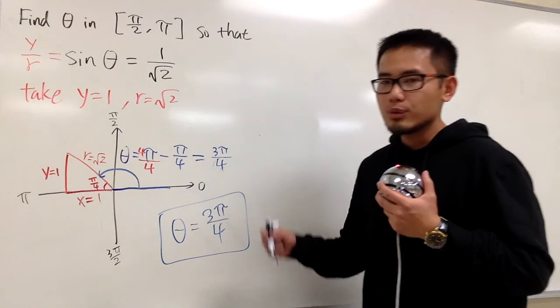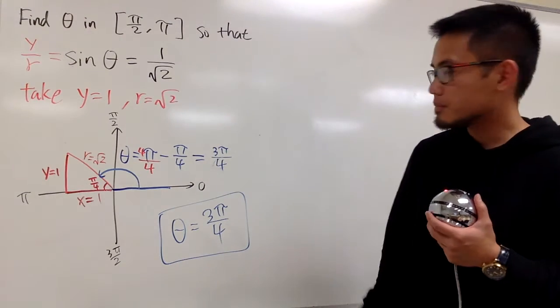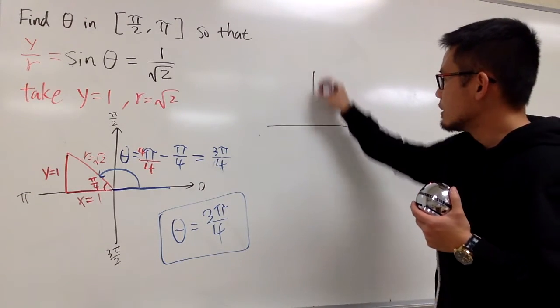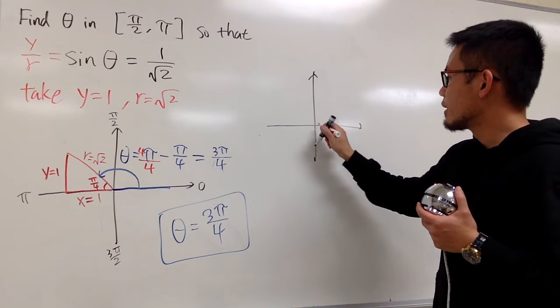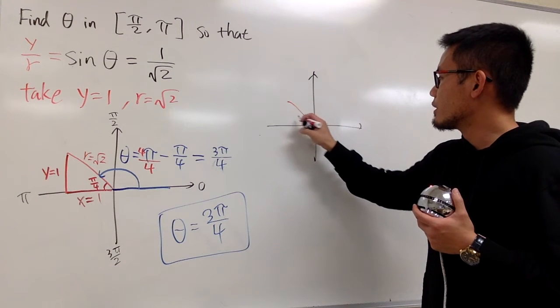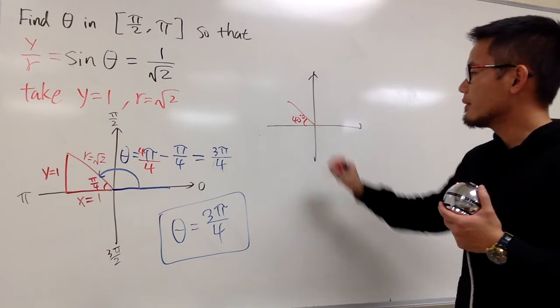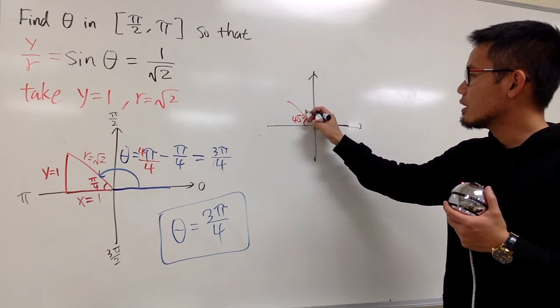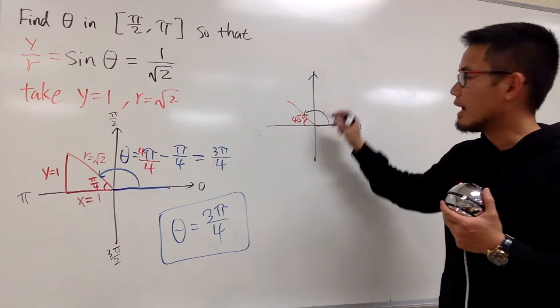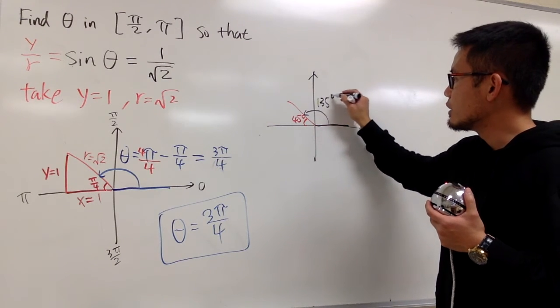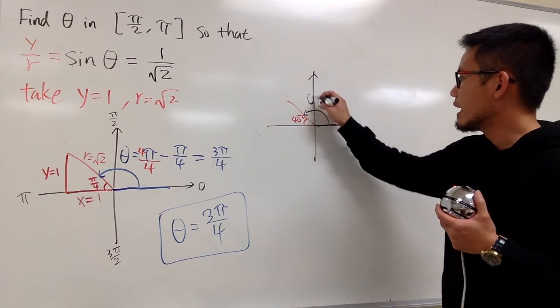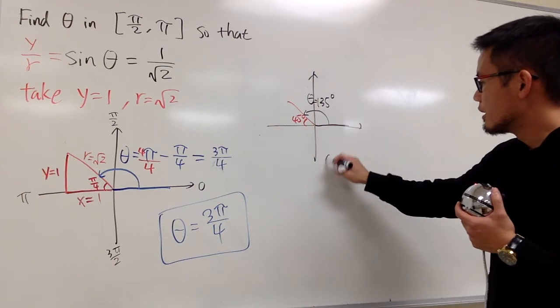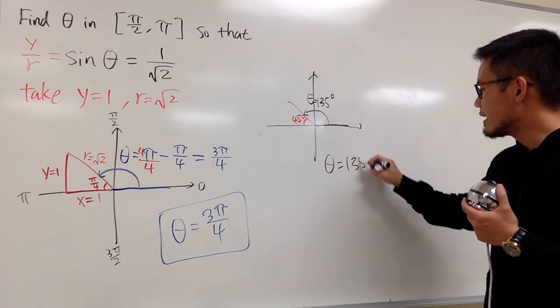Just real quick, another way to do it. This right here was 45 degrees. So that means from here to here is 90 plus 45, so altogether it's 135 degrees, and that's the angle theta. Theta equals 135 degrees.